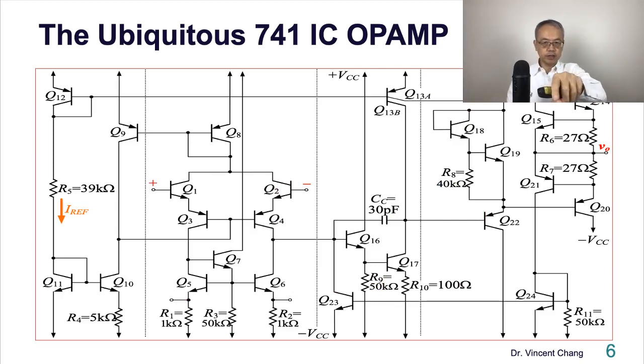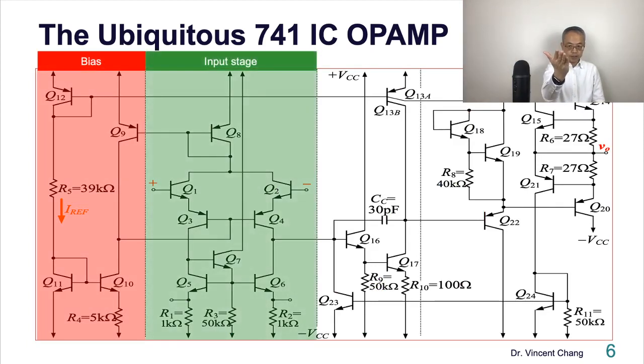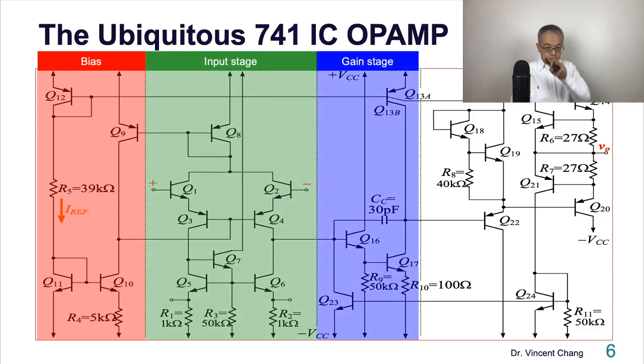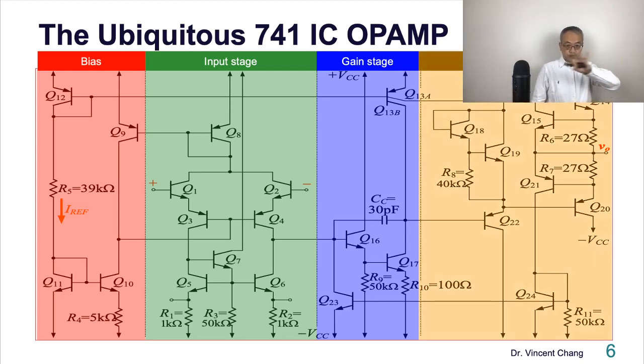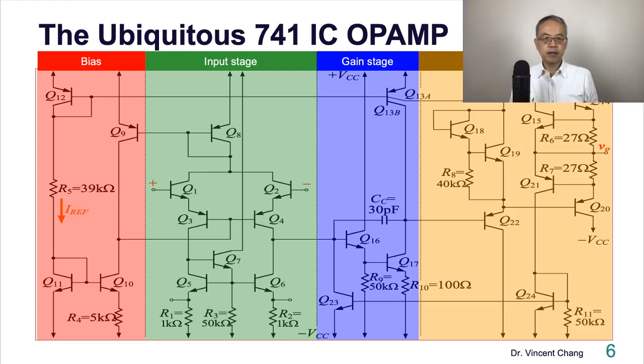So here's the circuit diagram. You see on the left, the bias, differential input. It's the differential, same as the previous slide. And then gain stage, you see the 30 picofarad across the feedback, and then the output stage. Bias, input, gain, and then output stage.